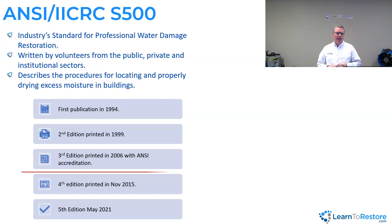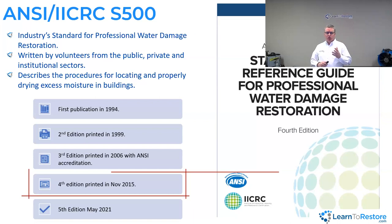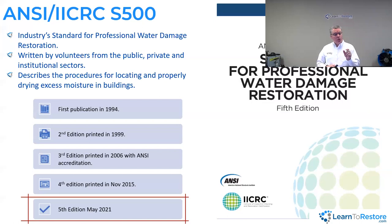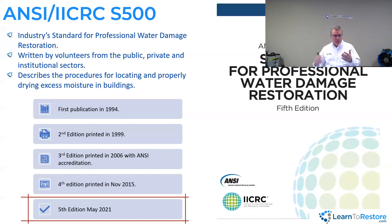The ANSI accreditation was first received in the third edition in 2006, and the IICRC has maintained that accreditation since. The next edition came out in 2015 — the fourth edition, also ANSI. The most current edition came out in May of 2021. At that point the reference guide was removed; there is an appendix with some information, three appendices, but the general reference guide has been removed to come out at a later date. ANSI would like the standard reviewed and updated every five years.